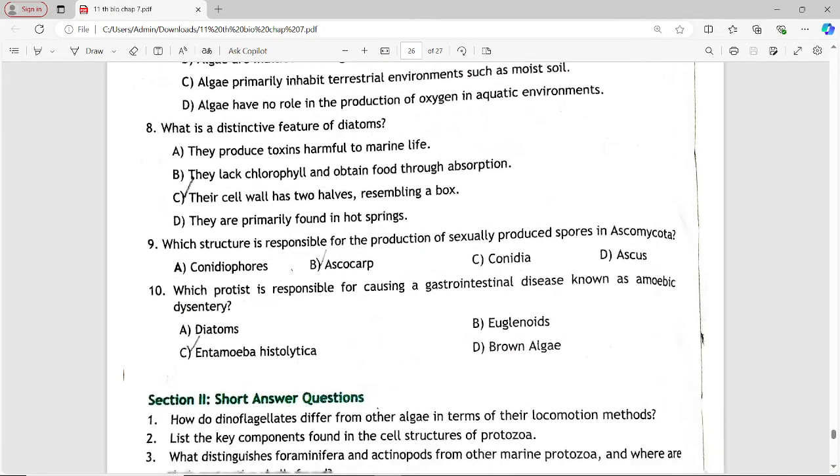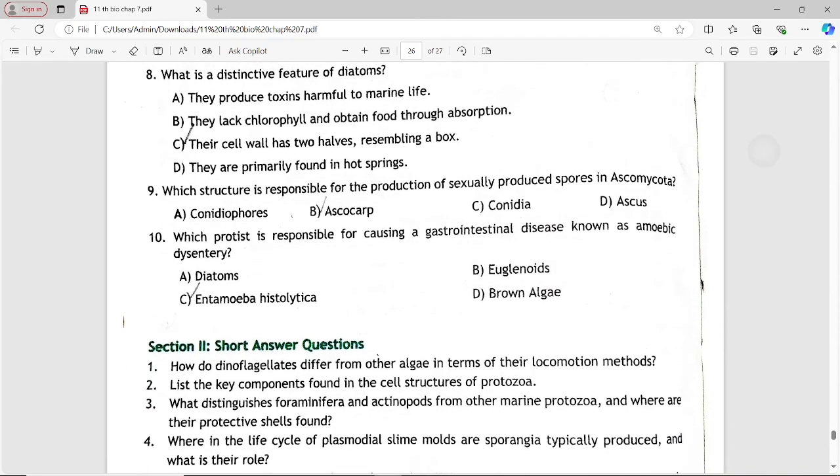Next MCQ: Which protist is responsible for causing a gastrointestinal disease known as amoebic dysentery? Options are: diatoms, Euglenoids, Entamoeba histolytica, brown algae. Answer is option C: Entamoeba histolytica.